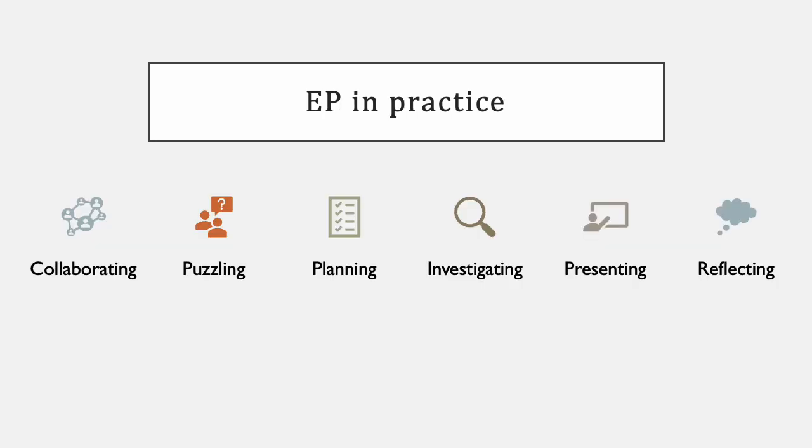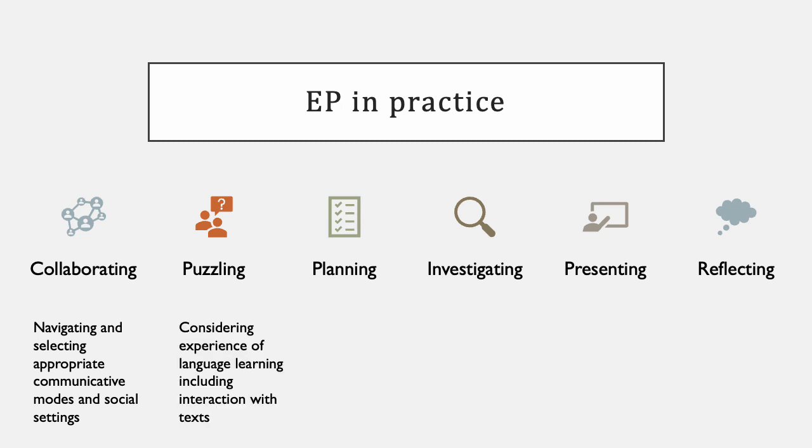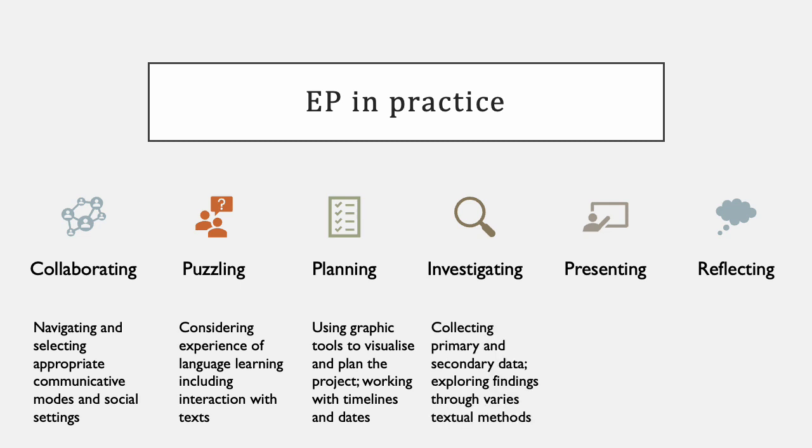In order to understand this a bit better, let's look at EP in practice. We have various stages of the EP process or framework. Collaborating really means navigating and selecting appropriate communicative modes and social settings — which can be tricky for the students — making decisions about how to communicate with their groups and how to plan and conduct the work. The puzzling process means actually deciding what they want to investigate, so considering experiences of language learning including interaction with texts. Then the planning: using graphic tools, making choices about how to plan their work and how to share that planning process with their group mates, and visualizing and planning the actual project — often working with timelines, dates, and some graphic representation.